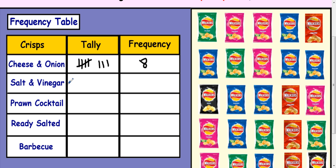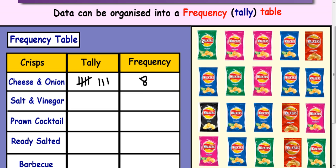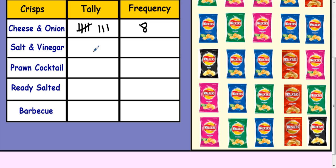OK, and salt and vinegar, that's green for Walkers. So 1, 2, 3, 4, 5. Strike through it, the frequency would be 5. And so on. So you could then create a bar graph.